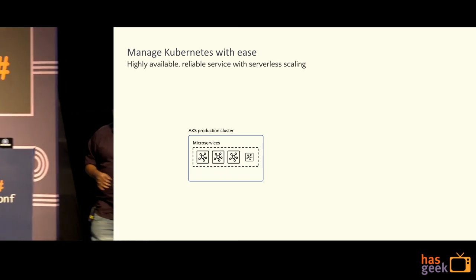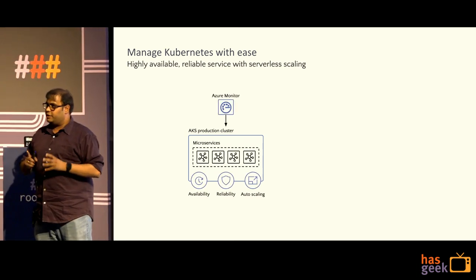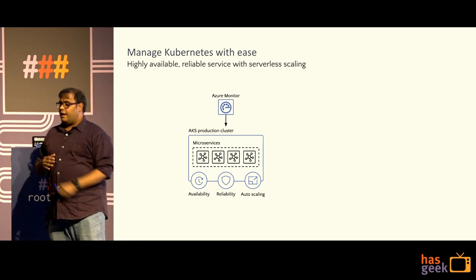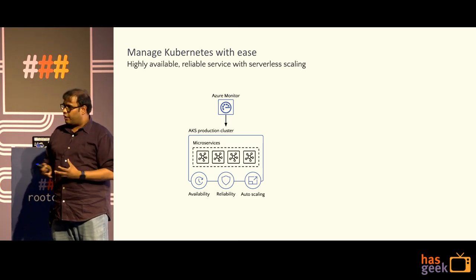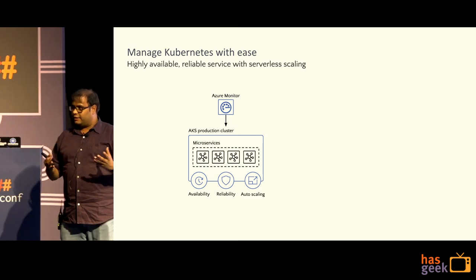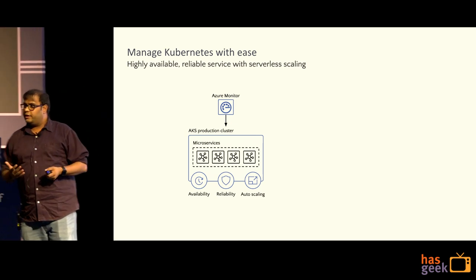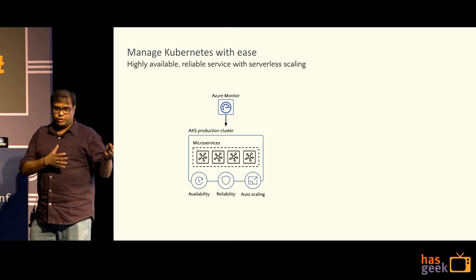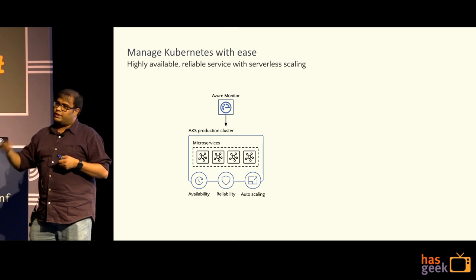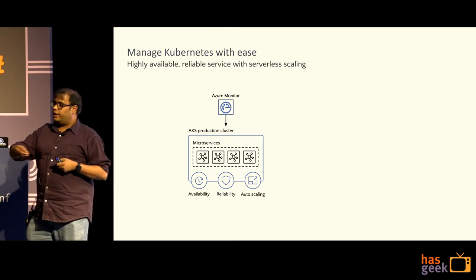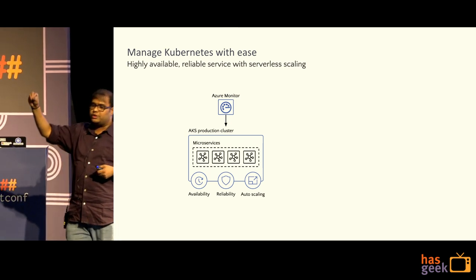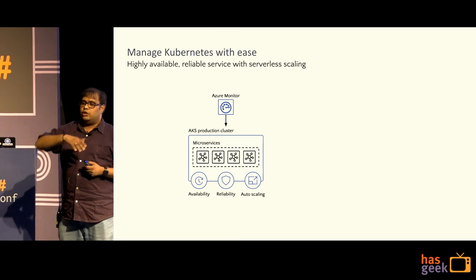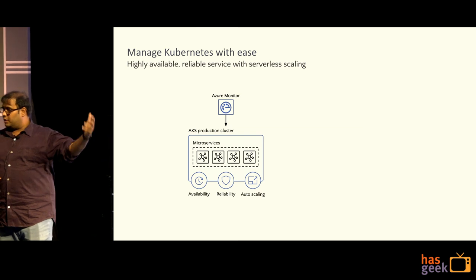Let's take an example. You've deployed a microservice application on a Kubernetes cluster, and you have certain microservices that need to be scaled because there's a lot of traffic coming in. The action you take today is to go ahead and create new servers and new nodes, attach these nodes to Kubernetes, and then pods get created onto the new nodes. Or you scale through horizontal pod scaling — just scaling the pods onto the nodes you already have.